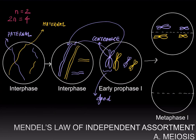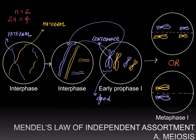The crux of independent assortment — Mendel's law of independent assortment — is that this is not the only way the chromosomes can line up across the metaphase plate. One could have a different pattern in which you have the paternal homolog of the long chromosome lining up below the metaphase plate, whereas the maternal homolog of the short chromosome still lines up at the bottom and the paternal homolog of the short chromosome still lines up at the top. These are the only two possibilities, and these two possibilities are equally likely.